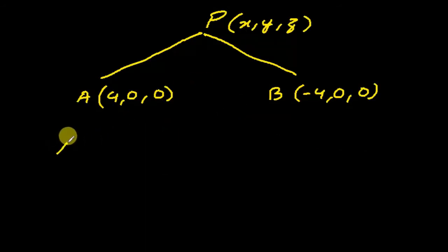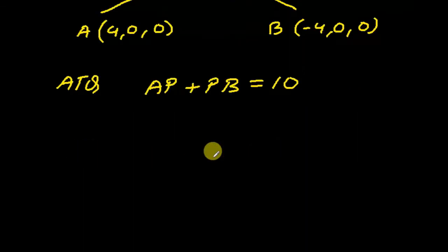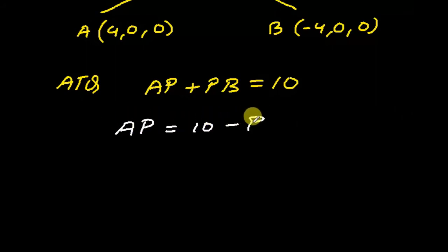According to the question, the distance AP plus the distance PB equals 10 units. We know we'll use the distance formula for both AP and PB, and both will involve square roots. So it will be better to send one square root to the right-hand side. That means we can write AP = 10 - PB. Now, squaring both sides will make the question easier to solve.